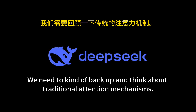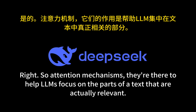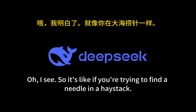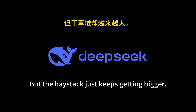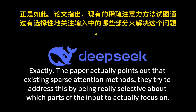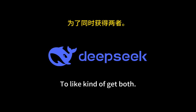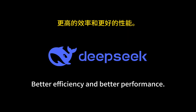To really understand NSA, we need to back up and think about traditional attention mechanisms. Attention mechanisms help LLMs focus on the parts of a text that are actually relevant, but as that text gets longer, it gets computationally expensive really fast. It's like trying to find a needle in a haystack, but the haystack just keeps getting bigger. Existing sparse attention methods try to address this by being selective about which parts of the input to focus on, but they haven't figured out how to do that without sacrificing either efficiency or accuracy. NSA aims for both.